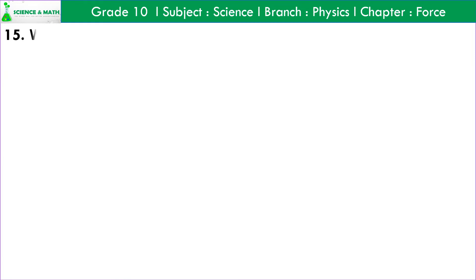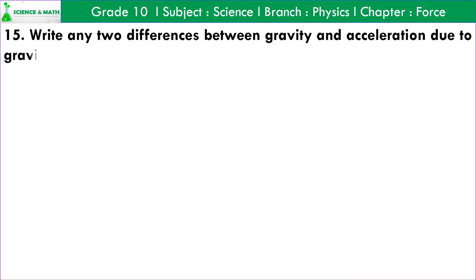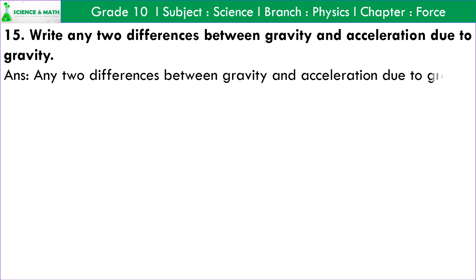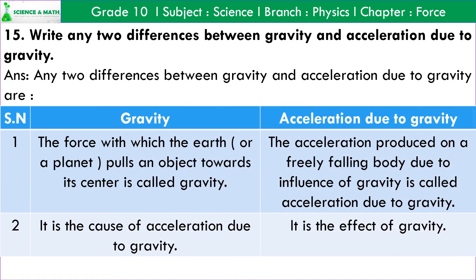Question number 15: Write any two differences between gravity and acceleration due to gravity. Answer: 1. The force with which the earth or a planet pulls an object towards its center is called gravity. The acceleration produced on a freely falling body due to the influence of gravity is called acceleration due to gravity. 2. Gravity is the cause of acceleration due to gravity, whereas acceleration due to gravity is the effect of gravity.